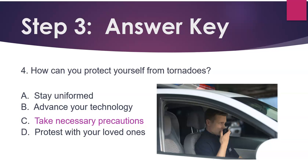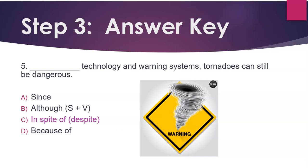Number 4: How can you protect yourself from tornadoes? Take necessary precautions. Number 5: Technology and warning systems — tornadoes can still be dangerous. In spite of. This is the same as 'despite.' The word 'although' is followed by a subject and verb, so it does not work in this case.